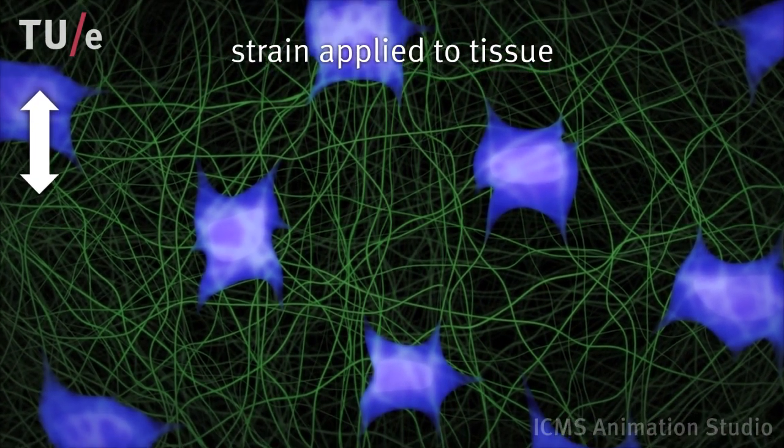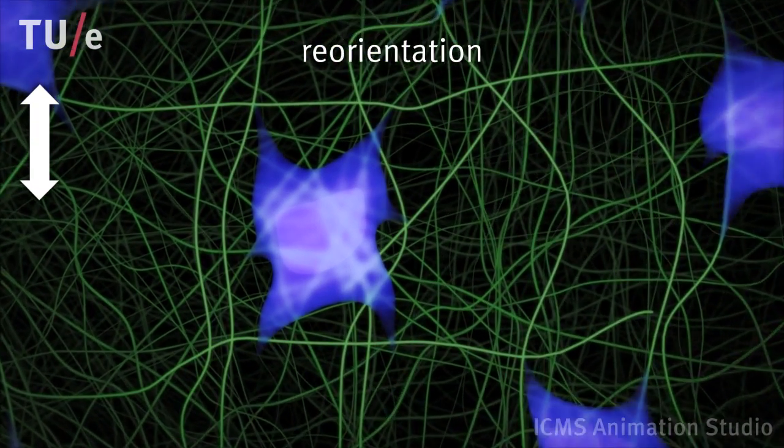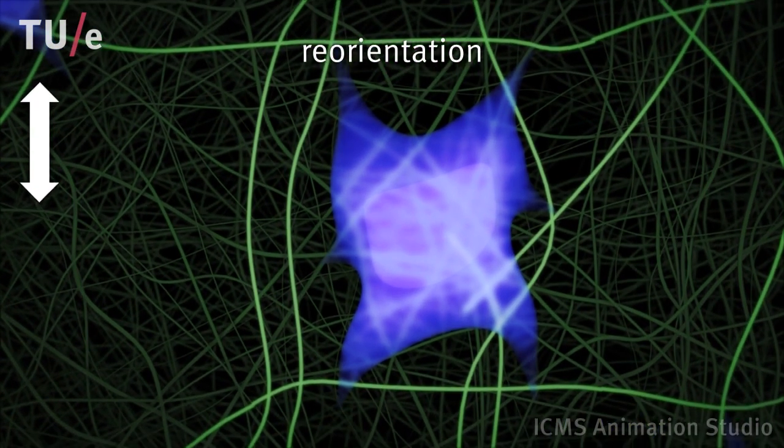When this tissue is cyclically loaded for prolonged periods of time, cells and collagen fibers align in the direction of the applied force.